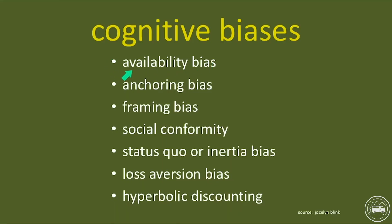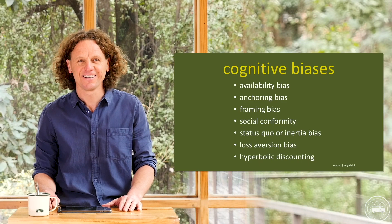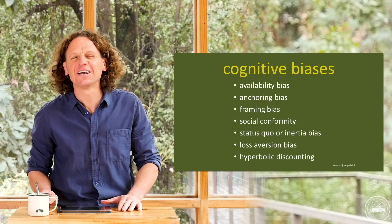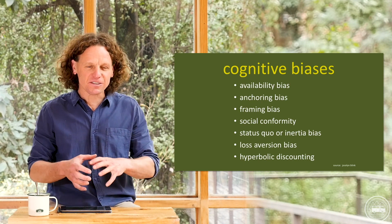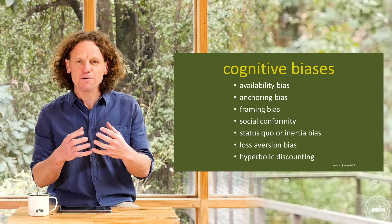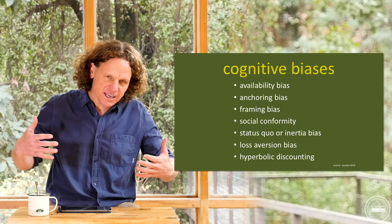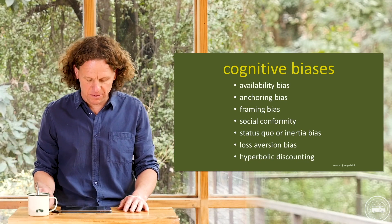What are they? The cognitive biases are: availability bias, anchoring bias, framing bias, social conformity bias, status quo or inertia bias, loss aversion bias, and hyperbolic discounting bias. We're going to go through each one of those individually, because you can see there is a different type of information that behavioral economists bring into the equation to understand how we behave.